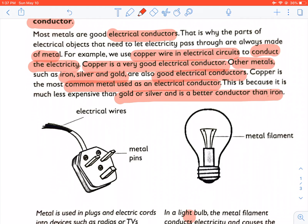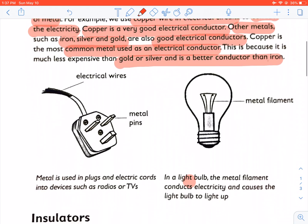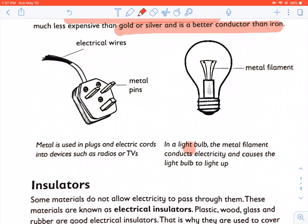If you look at the cord of an electrical appliance, you will notice that the wire is made of copper and the pins are made of metal. If you look at a light bulb, then the part that goes into the socket is made of metal, and the filament is made of metal.